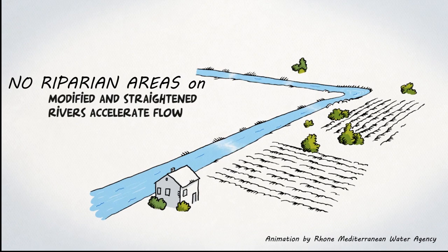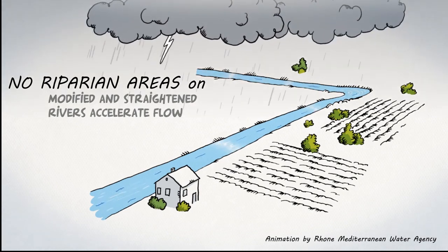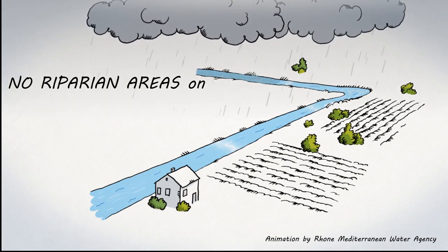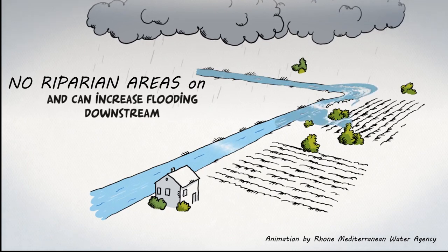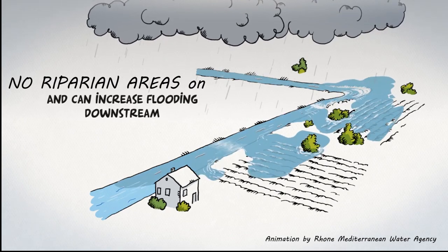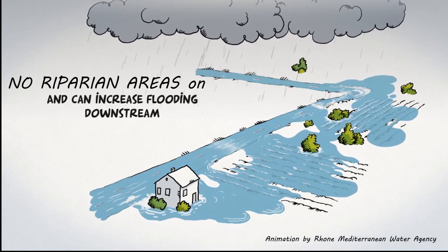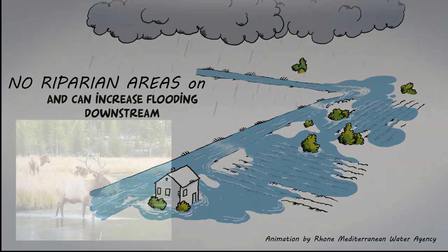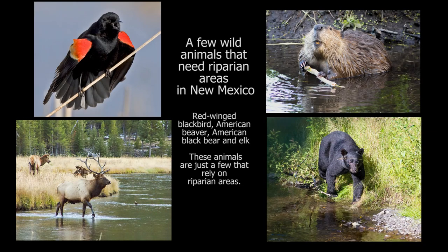Without riparian vegetation, floodwaters run fast. Accelerated flow damages homes, destroys roads and bridges, and tears into valuable wildlife habitat. We need healthy riparian areas to reduce soil erosion, capture sediment, filter pollutants, and make water cleaner.